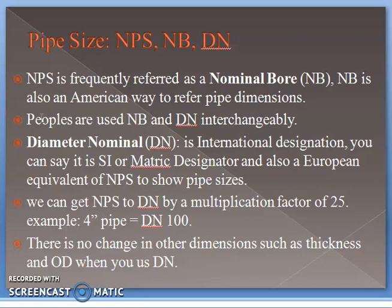We can convert NPS to DN by a multiplication factor of 25. For example, a 4-inch pipe in NPS multiplied by 25 gives DN 100. There is no change in other dimensions such as wall thickness and outside diameter when converting from NPS to DN.